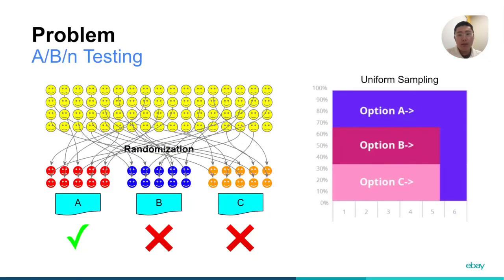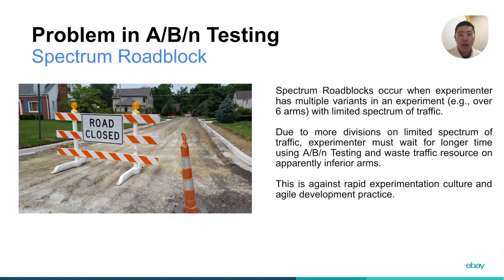When decision makers want to identify the best arm among several options, the simplest and most common design is called ABN testing, where traffic is allocated randomly and uniformly distributed among several options. However, live traffic is a limited and valuable resource for rapid iterations. Due to more divisions on traffic by many more arms, ABN testing requires longer time to identify a winner, as it wastes traffic resources on apparently inferior arms. This is against rapid experimentation culture and agile development practice.